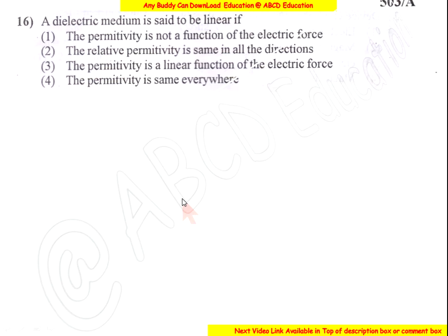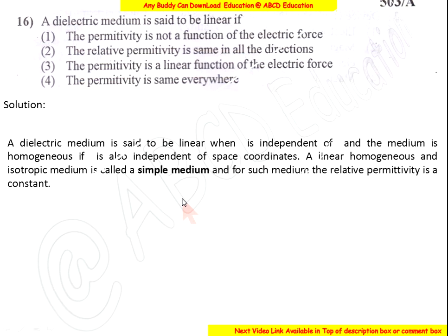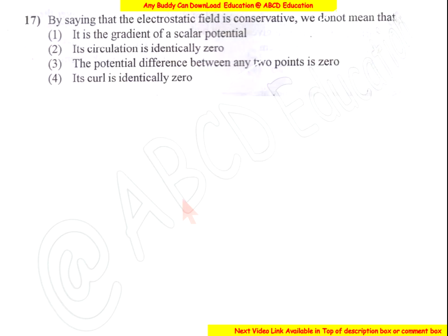A dielectric medium is said to be linear when the permittivity is independent of the electric field intensity. The medium is homogeneous if the permittivity is also independent of space coordinates. A linear, homogeneous, and isotropic medium is called a simple medium, and for such a medium the relative permittivity is constant. The dielectric medium is linear if permittivity is not a function of the applied force field.